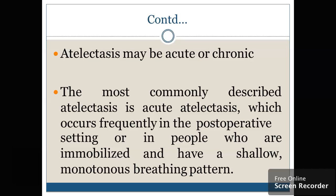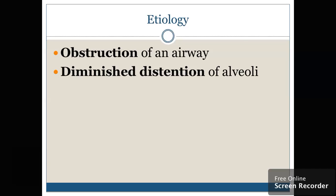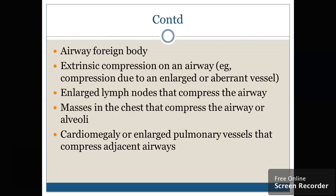It can be acute and it can be chronic, because it occurs after a post-operative setting or in people who are immobilized and have shallow, monotonous breathing, or the patient is having any kind of trauma. Regarding etiological factors, there will be obstruction of the airway — if there is any kind of obstruction in the airway or diminished distension of the alveoli. Airway foreign bodies or extrinsic compression on the airway — that is compression due to large or aberrant vessels — or masses of the chest that compress the airway and the alveoli.